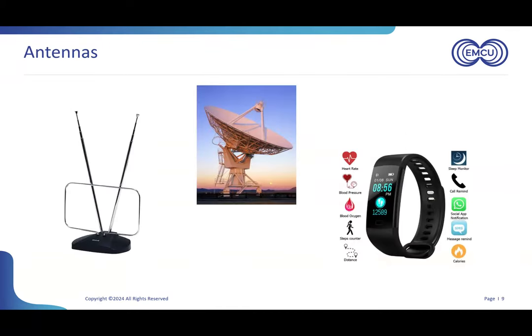One of the issues is that we tend to all think we know what antennas look like. You've got the really big antennas that can talk to space, like the Goldstone antenna here from NASA. You've got the old rabbit ears you used to have to adjust to get good TV reception over the air. And of course, probably the vast majority of people in this audience are wearing an antenna of some kind on their person right now — in your phone, a smartwatch. There's no end of Internet of Things devices where antennas are integrated.